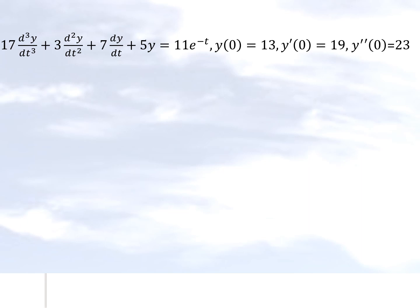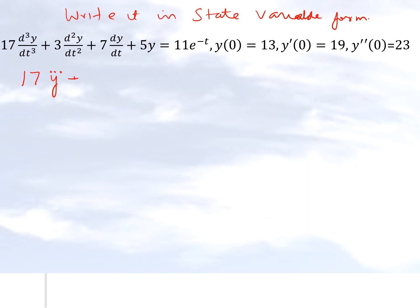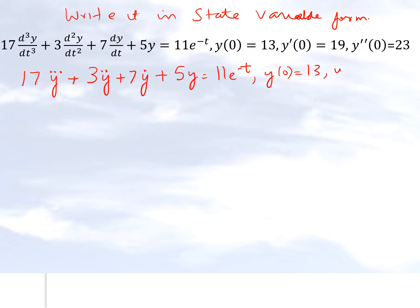Here is a problem statement. Somebody is giving you a third order ordinary differential equation and what they want you to do is to write it in differential equation state variable form. We will rewrite this using dot notation to show derivatives: first derivative is y-dot, second derivative is y-double-dot, and third derivative is y-triple-dot.